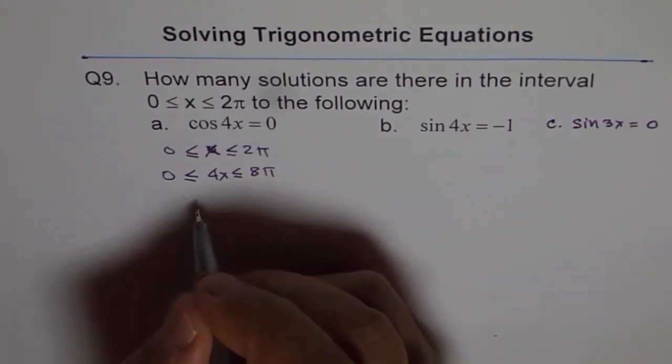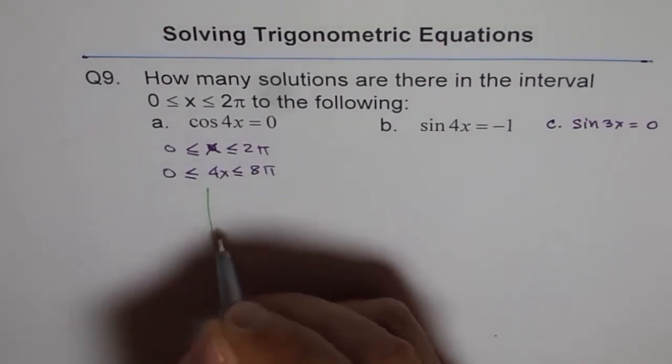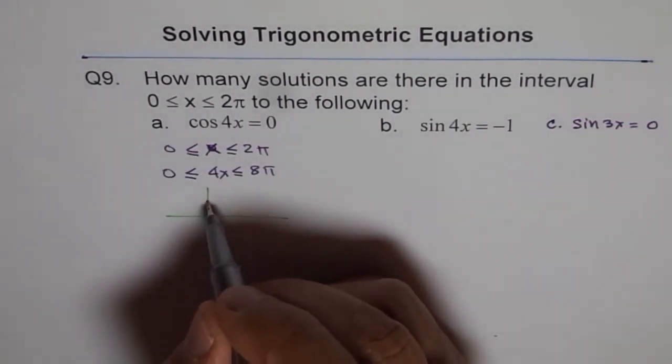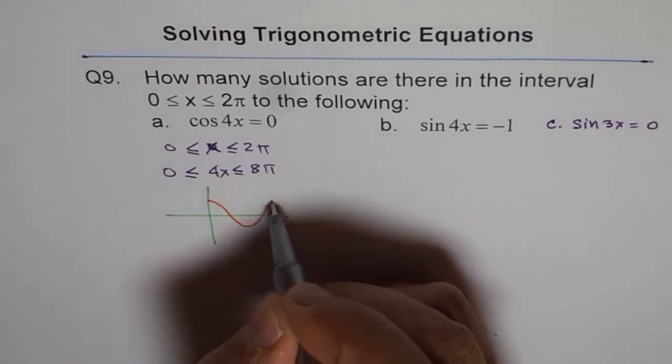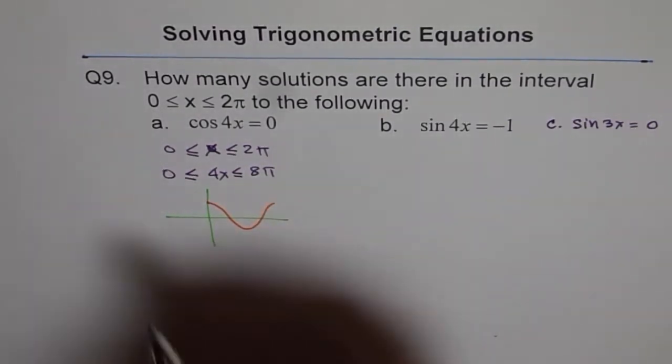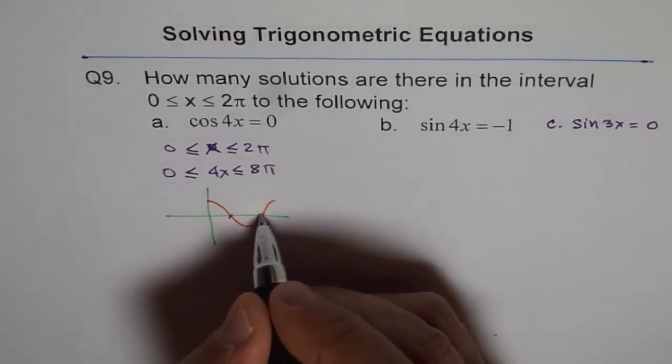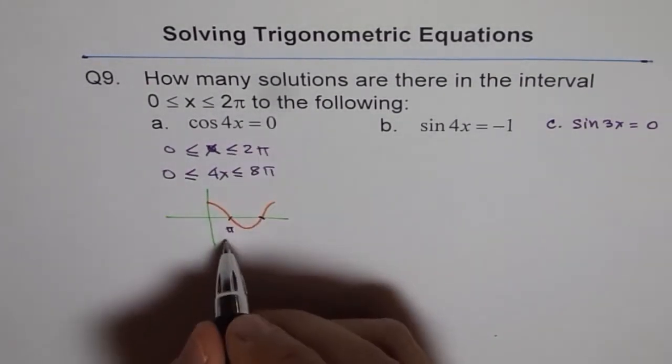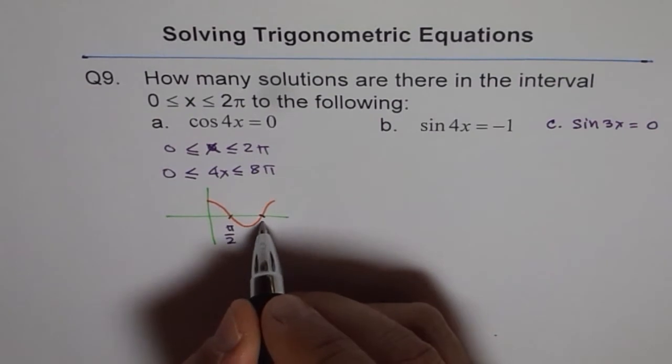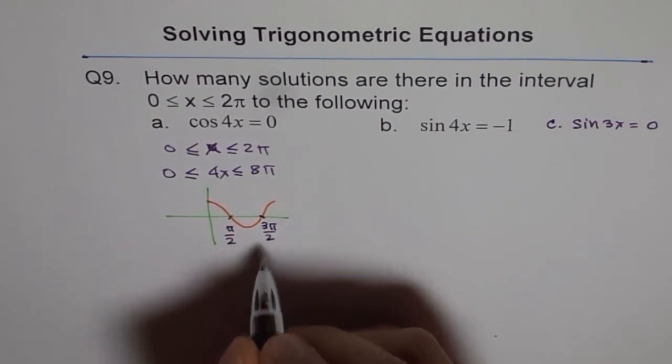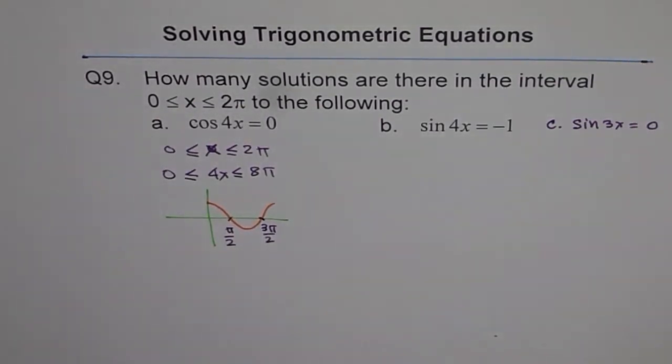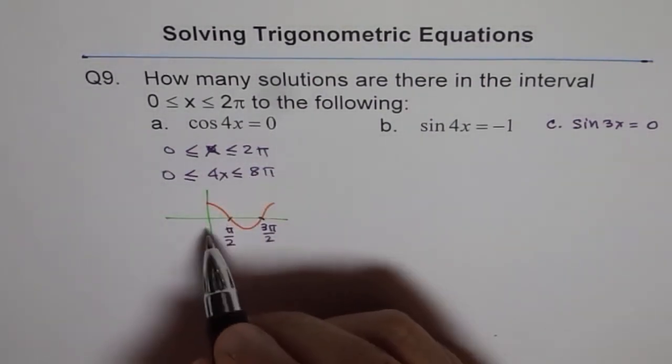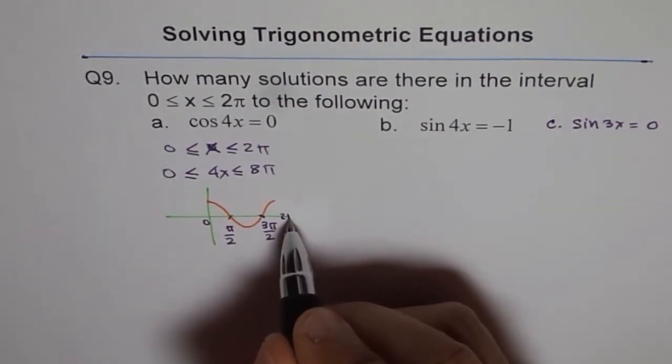Now, let's look into general cos function. So the cos function normally starts with 1 and then goes like this and goes like this, correct? So there are basically 2 solutions here. And the 2 solutions for cos being 0 is π by 2 and 3π by 2. So these are the 2 solutions for this cos function and these solutions are between 0 to 2π.